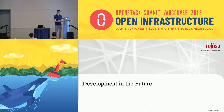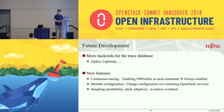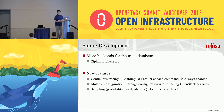You can find more information in the link at the bottom of the slide. For development in the future, we're working on adding more backends to the trace database, such as Zipkin and LightStep. We are also working on some enhancements. The first one is continuous tracing — currently you need to explicitly specify that you want OS Profiler to record data every time, but with this feature you won't have to do that anymore. The second is mutable configuration — today if you change configuration in OpenStack services you need to restart them, but with this feature you won't have to do that either.